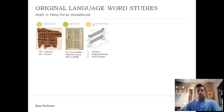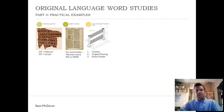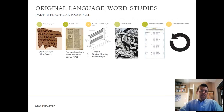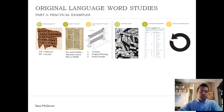Just as a little bit of a review: in part one we talked about how we determine the original language, we use a quality word-for-word translation in English, and we have three guardrails. Then in part two, we looked at how to choose key words, use blueletterbible.org to find the original word and details, and then return to the original context.